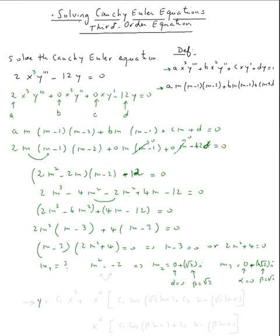So y will be equal c₁x^m₁, m₁ is 3, plus for these two complex roots we get from this equation will be x^α, which is 0, and then... let me write the formula here.